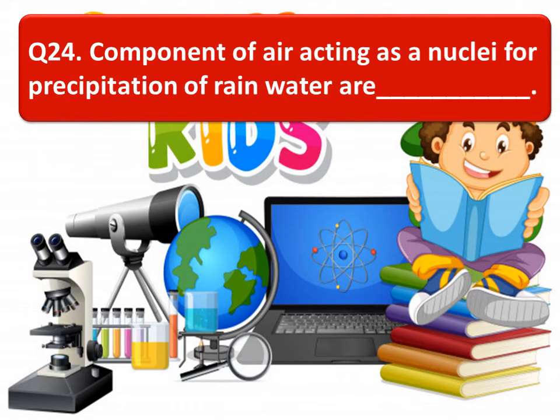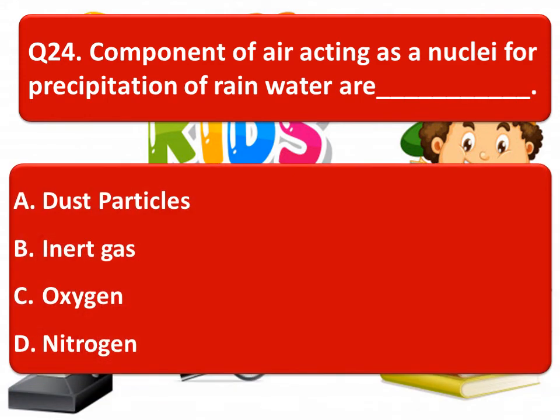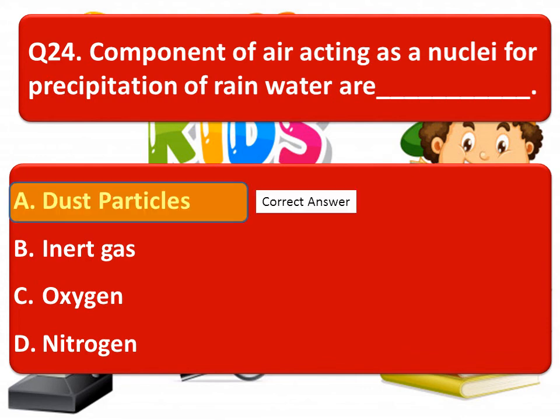Question 24: which component of air acts as a nuclei for precipitation of rainwater? Option A: dust particles, Option B: inert gas, Option C: oxygen, Option D: nitrogen. Think about the correct answer.